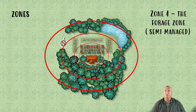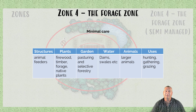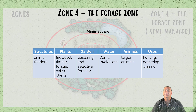Zone 4, commonly called the forage zone or semi-managed zone, is further away — once every six months or so. We're not going out there very often at all, and it requires minimal care. It is more self-replicating and self-managed, so we only have to do little things. Structures could include animal feeders. Plants include firewood timber, forage, and native plants. The garden involves pasture and selected forestry. Water: dams and swales. For animals, larger animals that need the space. Uses include hunting, gathering, and grazing.